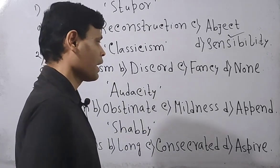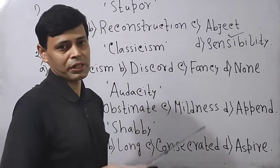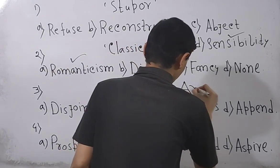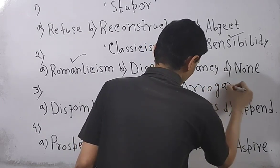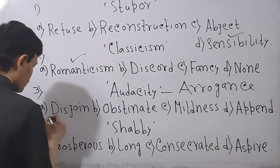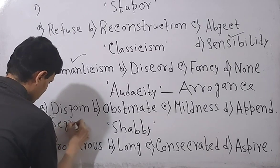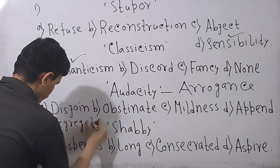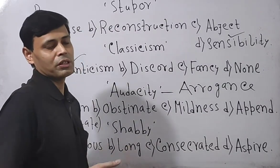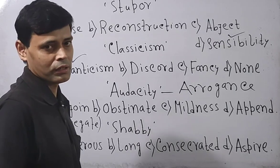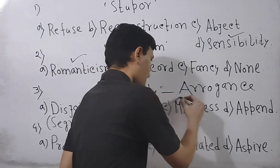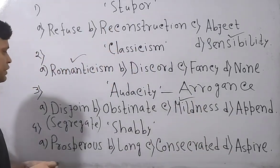Append means addition. Audacity suggests arrogance. Disjoint means separate or segregate. The answer is mildness — whenever someone is audacious, the opposite should be mild, very calm, not audacious at all.